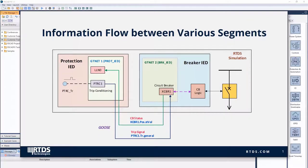This figure shows the information flow between various segments of the simulation. The breaker IED includes simple controls that enable opening and closing of the circuit breaker based on internal push button from runtime, or an external trip signal received from the protection IED via GOOSE communication. Similarly, the protection IED receives the status of the breaker from the breaker IED in the form of a GOOSE message. There exists a real Ethernet communication link between two GTNet X2 modules which facilitates the exchange of GOOSE messages.